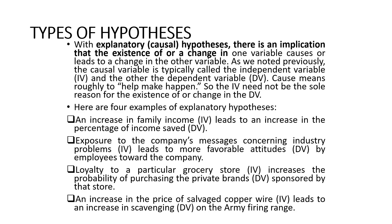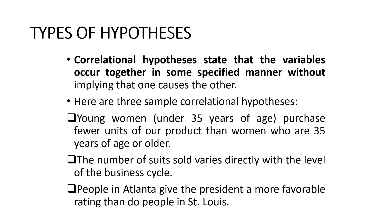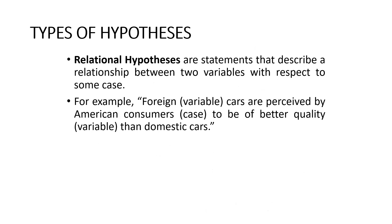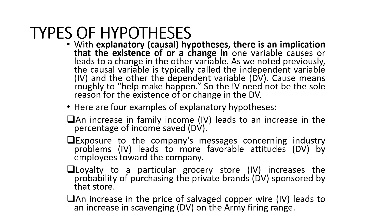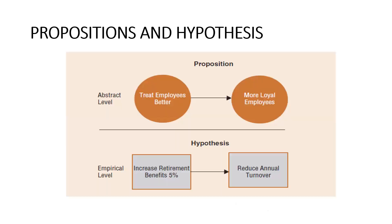Here are some examples of causal hypothesis. An increase in the price of salvage copper wire leads to an increase in scavenging on the army firing range. Another example: exposure to company messages concerning industry problems leads to more favorable attitudes by employees towards the company. So in relational hypothesis, there are two types: correlational and explanatory or causal hypothesis.